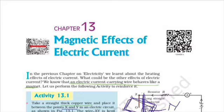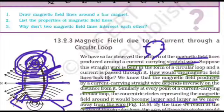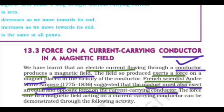In this part we are going to discuss about the right hand thumb rule and about the magnetic field due to a current through a circular loop, then about the magnetic field due to current in a solenoid, then about the force on a current carrying conductor in a magnetic field, where we will discuss about Fleming's left hand rule.